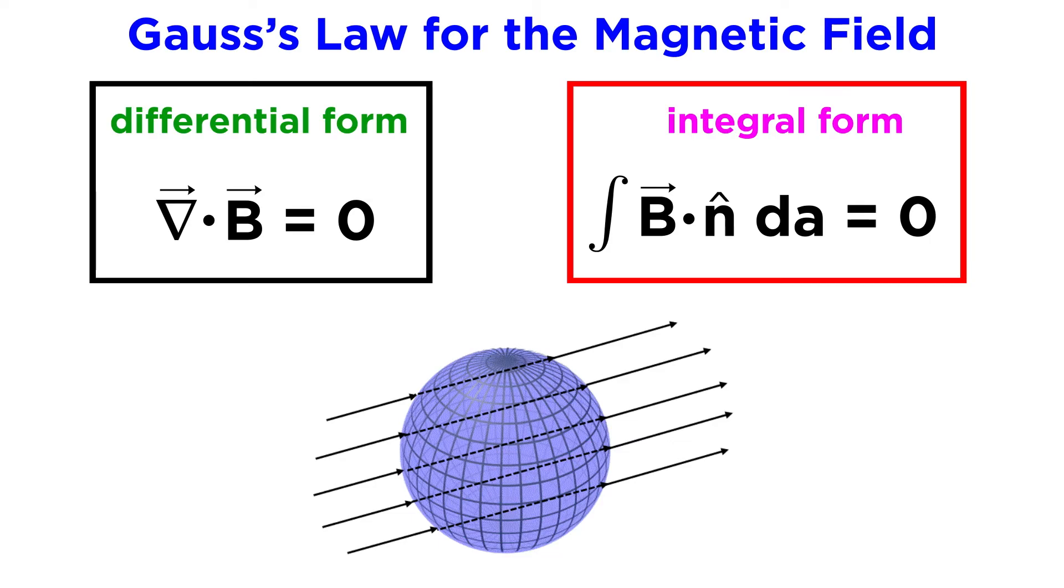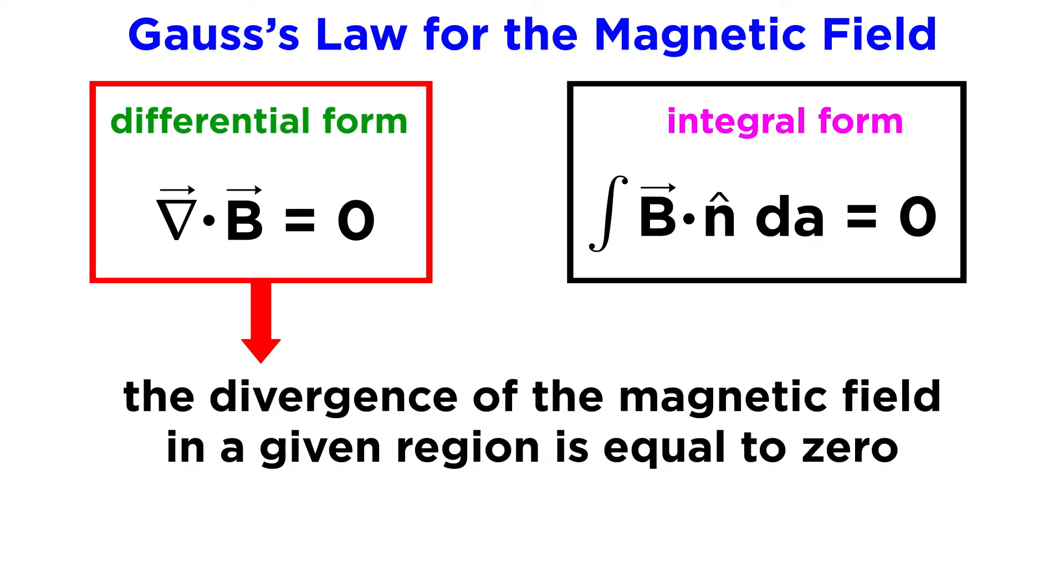It is more appropriately used as a boundary condition to limit the number of possible solutions. The differential form, on the other hand, states that the divergence of the magnetic field in a given region is equal to zero.